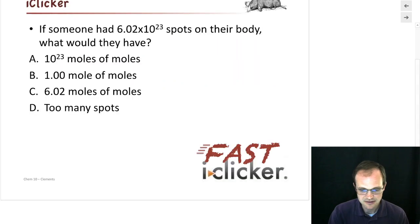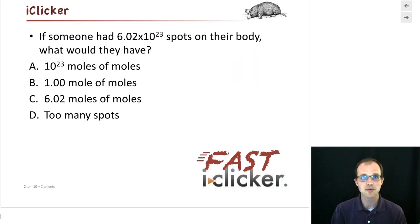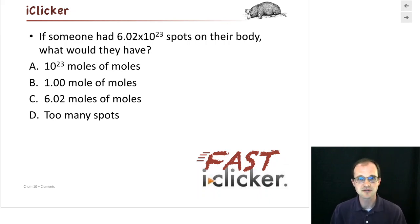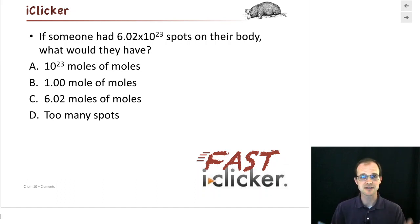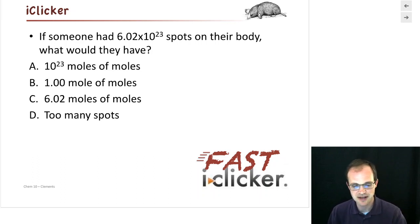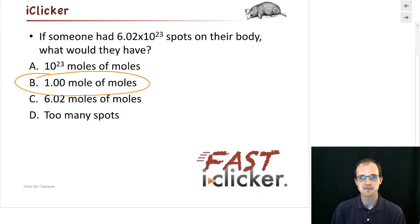Here's a quick question: if someone had 6.02 times 10 to the 23rd spots on their body, what would they have? Would they have 10 to the 23rd moles of moles? Would they have 1 mole of moles? 6.02 moles of moles? Or just too many spots? Well, 6.02 times 10 to the 23rd of anything is 1 mole, so 6.02 times 10 to the 23rd spots is 1 mole of spots. And spots on our body are moles — so there's my bad attempt at humor: 1 mole of moles.